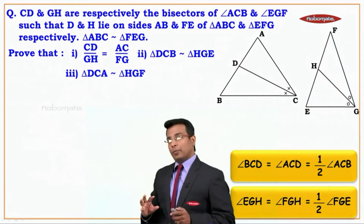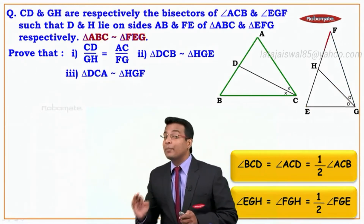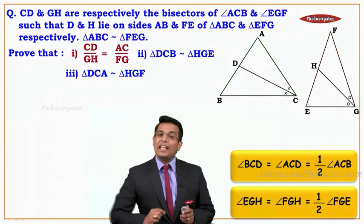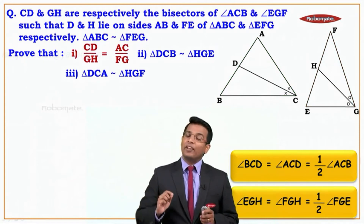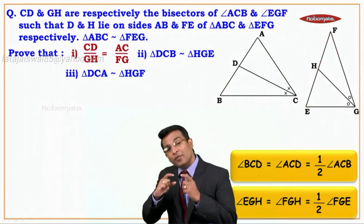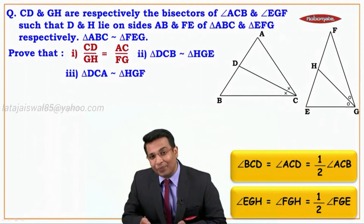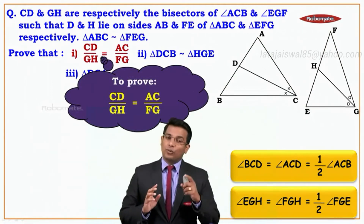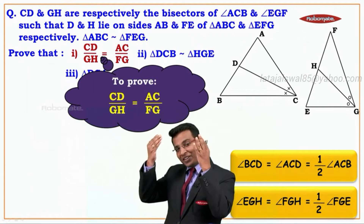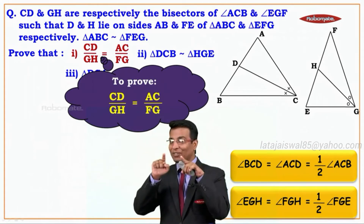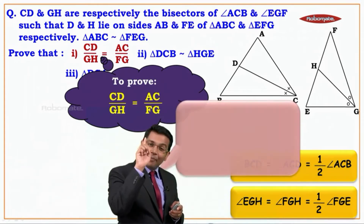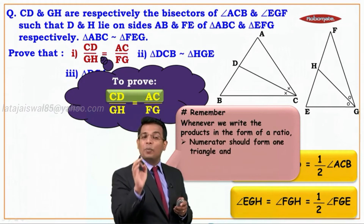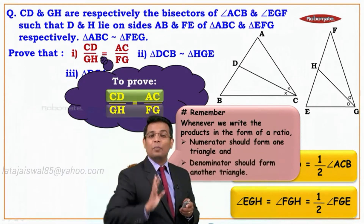From the given information, we also have triangle ABC similar to triangle FEG. We need to prove that CD upon GH is equal to AC upon FG. When we want two ratios to be equal, we need to get two triangles to be similar — the numerator should form one triangle and the denominator should form the other.